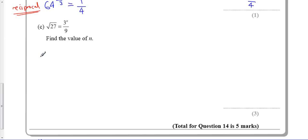I know the square root of 27 is equal to the square root of 3 times the square root of 9, which is, this bit is just 3, which is the square root of 3 times by 3.